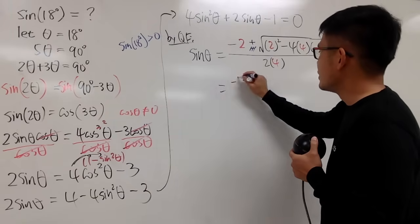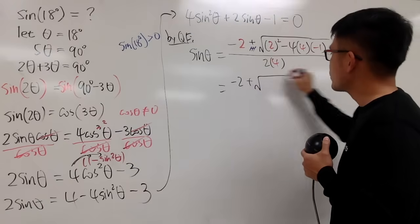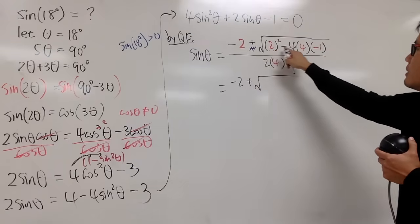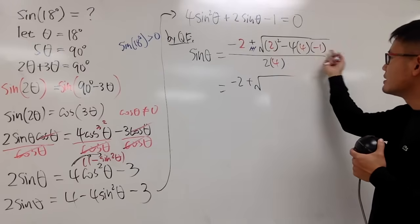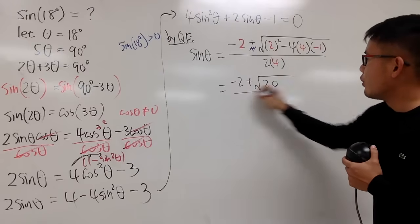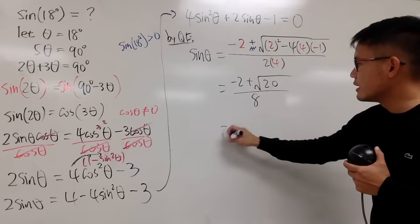Okay. So, now let's just do the work. This is negative 2, and then plus, open the square root. This is 4, and minus minus become plus, and then that's 16, and then 4 plus 16 is 20, and then over 8.